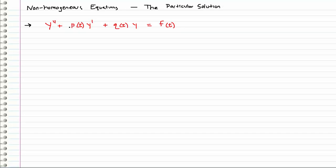Y double prime plus some function of t times y prime plus another function of t times y equals some function f of t. This does not equal zero, so it is non-homogeneous.